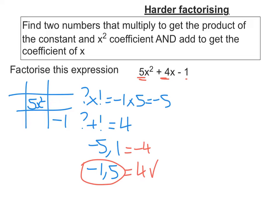So put my values in and I'm going to get negative x for the negative 1 and 5x. And now let's factorise rows and columns. 5x squared and 5x, the common factor is 5x. 5x, negative x and negative 1, the common factor is negative 1.